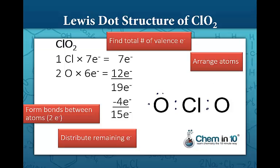One, two, three, four, five, six, seven, eight, nine, ten, eleven, twelve, thirteen, fourteen, fifteen. Notice that chlorine doesn't have a full octet, but let's use formal charge to determine if this is a viable Lewis dot structure for chlorine dioxide.